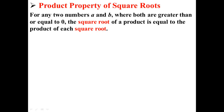According to the product property of square roots, for any two numbers a and b, where both are greater than or equal to 0, the square root of a product is equal to the product of each square root. Really, what that means is the square root of ab is equal to the square root of a times the square root of b.